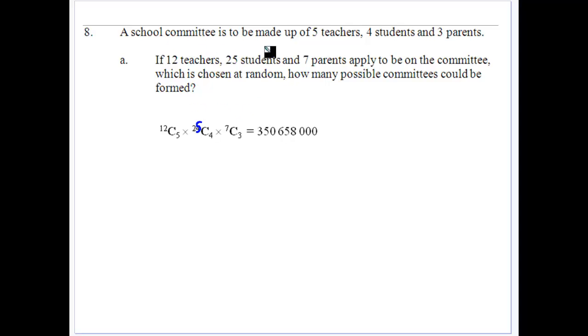We've got to get a school committee made up of five teachers, four students and three parents. And they've got 12 teachers, 25 students, seven parents applying. So you can see that you want 12C5, groups of five teachers out of 12, groups of four students out of 25 and groups of three parents out of seven. Gives you a very large number, 350,658,000.